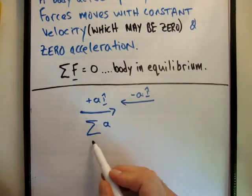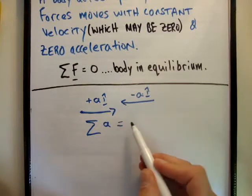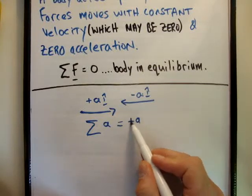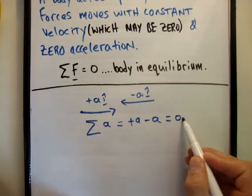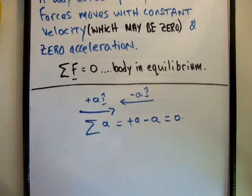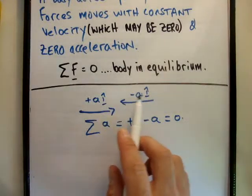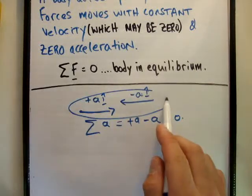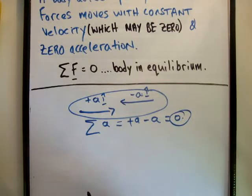These are two vectors going in opposite directions. So what's the sum? That's going to be plus a minus a equals zero. So the net result of having these two vectors act on something is nothing - they cancel each other out.